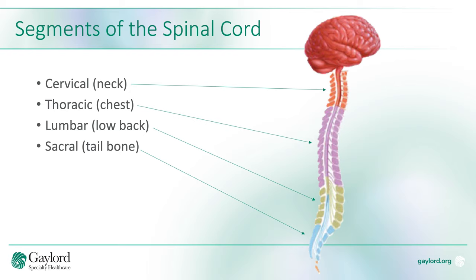Your lower back is referred to as your lumbar spine. The nerves that enter and exit the spinal cord there connect to your legs. And your sacral spine, or your tailbone, has nerves that control things like sexual functioning and bowel and bladder control.